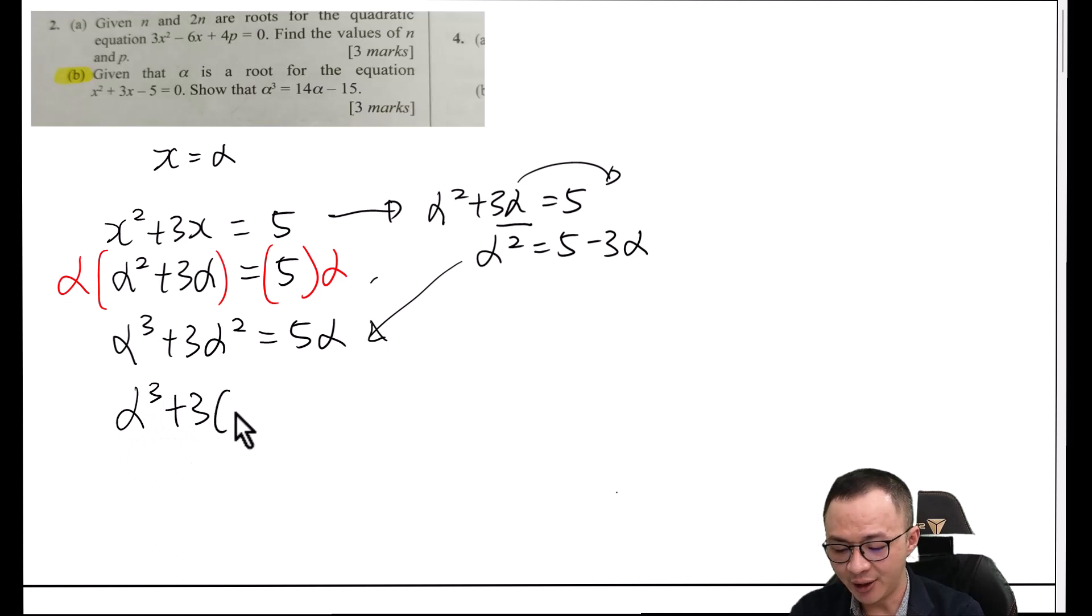Then I should have something like 3 times my alpha squared, which is 5 minus 3 alpha, equals 5 alpha. So I will just expand it. This one should give me 15 minus 9 alpha equals 5 alpha.